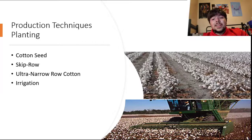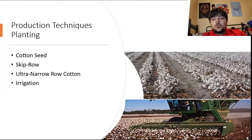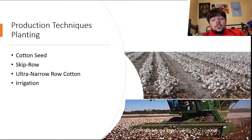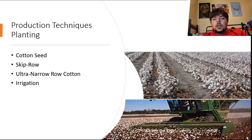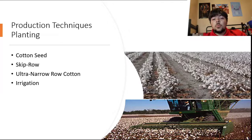Cotton seeds are acid de-linted seeds, which removes the short fuzzy fibers from the cotton seed and improves germination and uniformity for growth. Seeds are also fungicide coated to prevent early plant disease. Irrigation has four main practices including the use of sprinklers, furrows, pivot systems, and drip irrigation.